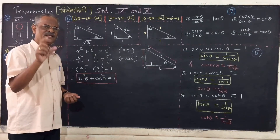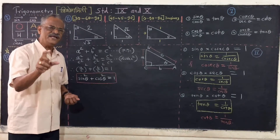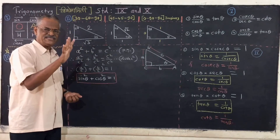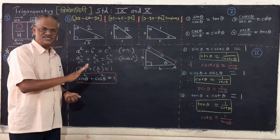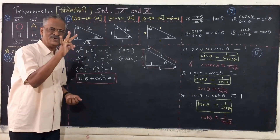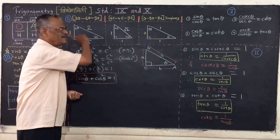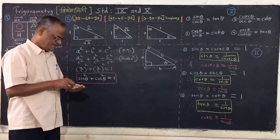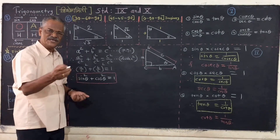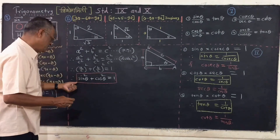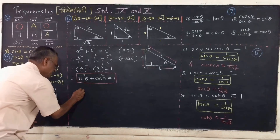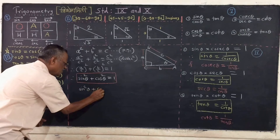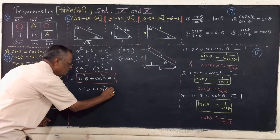This is a very interesting and important identity in trigonometry. Now let us move further by using this identity: sine squared theta plus cos squared theta is equal to 1. And if we divide here by cos squared theta —